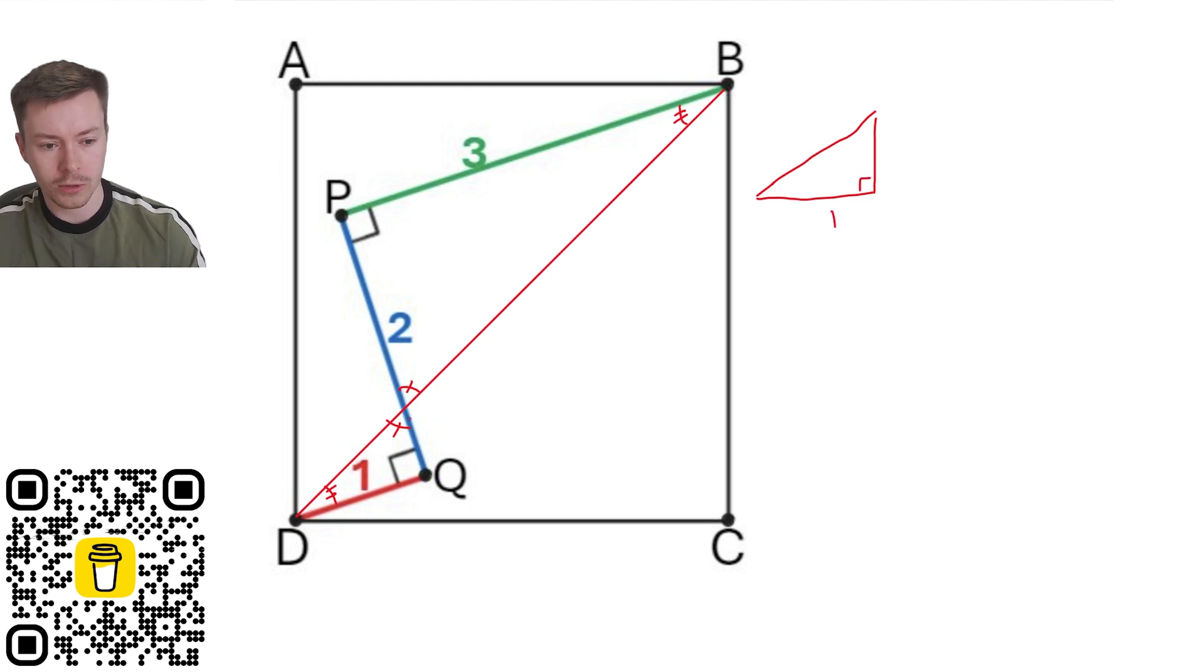So I've got my length of one there. Now, what I really want to do is be able to work out this diagonal. If I can work out the blue length for each of these similar triangles, then I can use Pythagoras to work out the diagonal. And then I can use that diagonal to then work out the area of my square. That would be the 3 here. And then I've got my right angle.